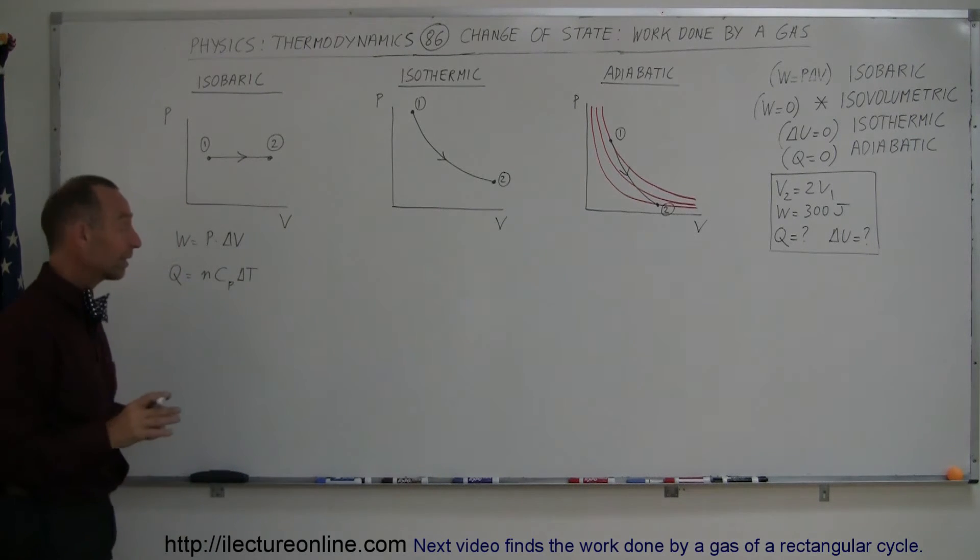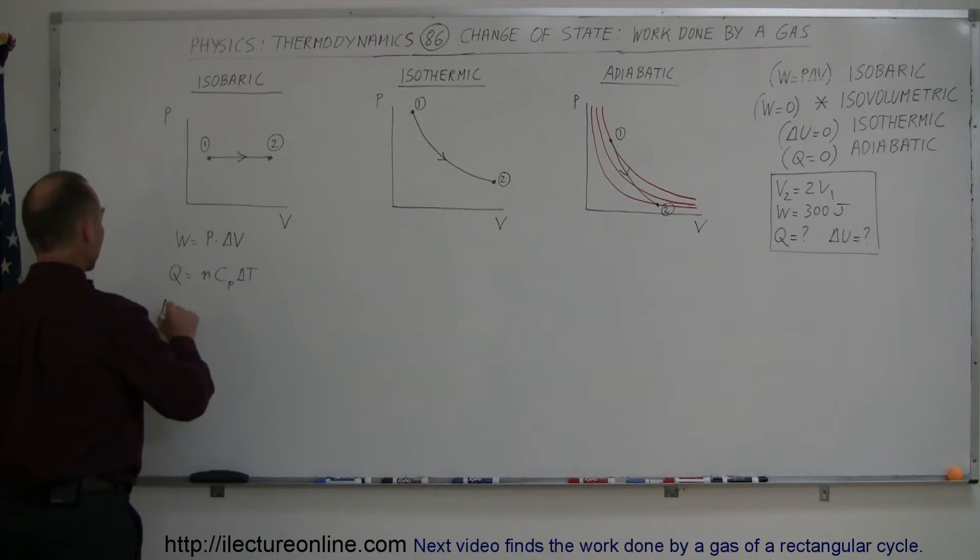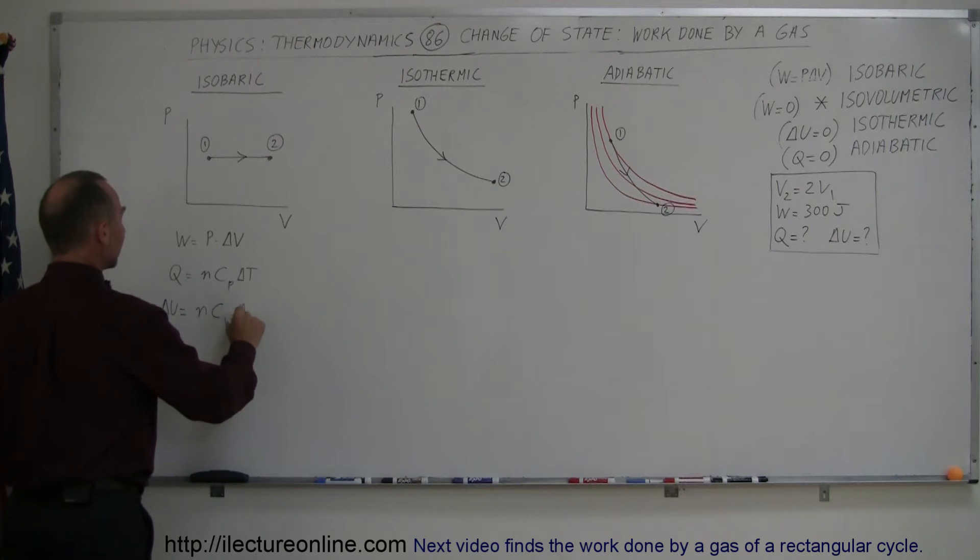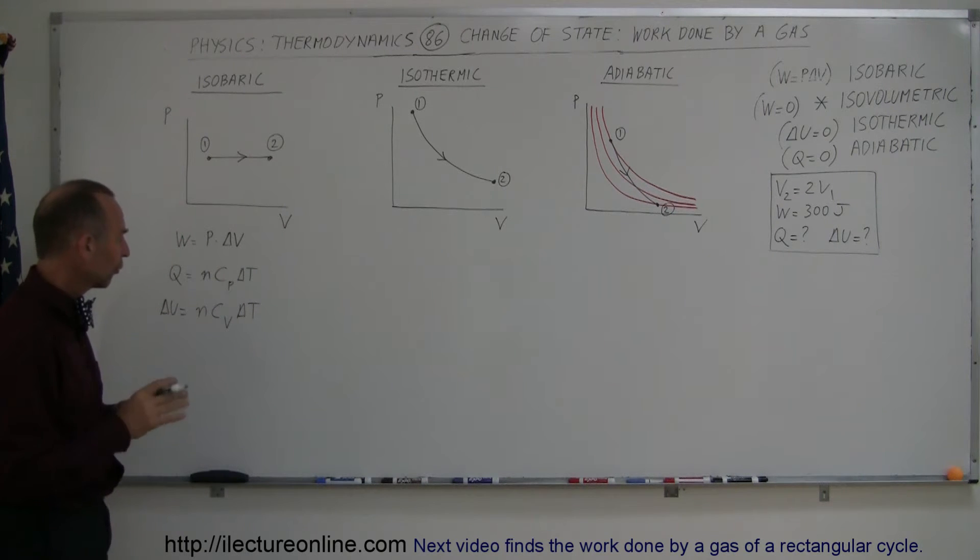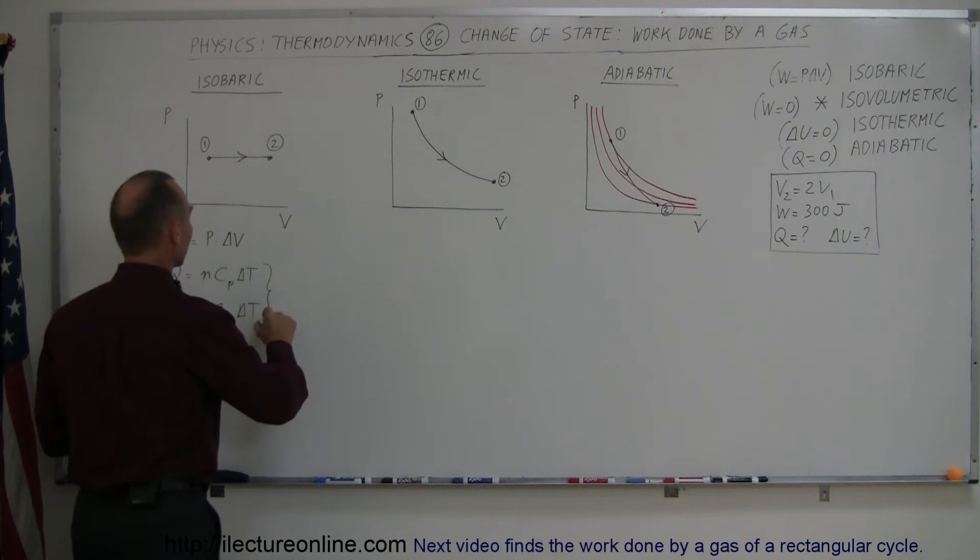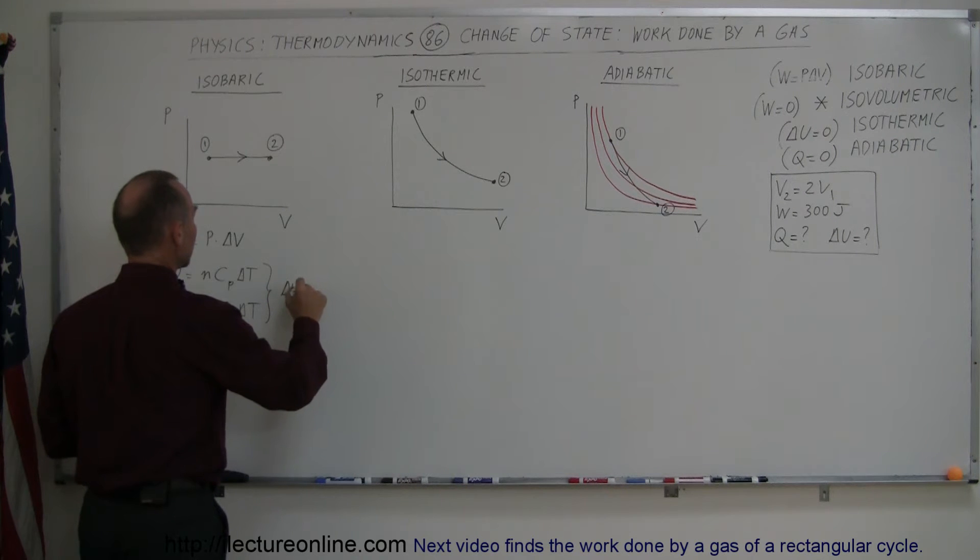We also know that the change in internal energy, delta U, is equal to N C sub V delta T. And by using the first law of thermodynamics, we can also say that delta U is equal to Q minus W.